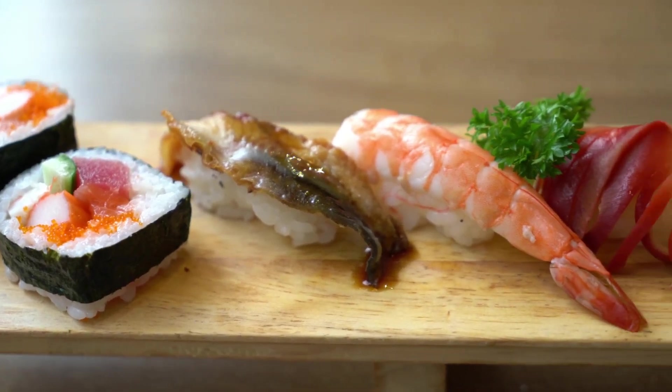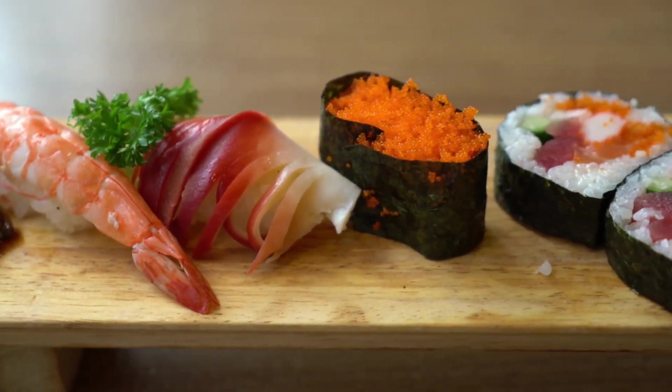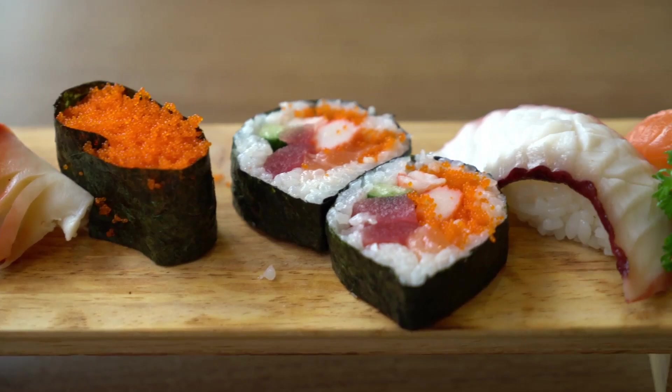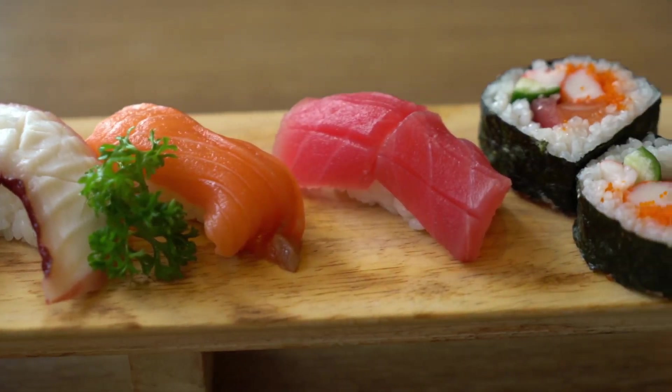Seafood like salmon, trout, shrimp, and krill also contain astaxanthin, thanks to their diet of astaxanthin-rich algae. Additionally, the yeast xanthophyllomyces dendrohouse is another source used in dietary supplements.